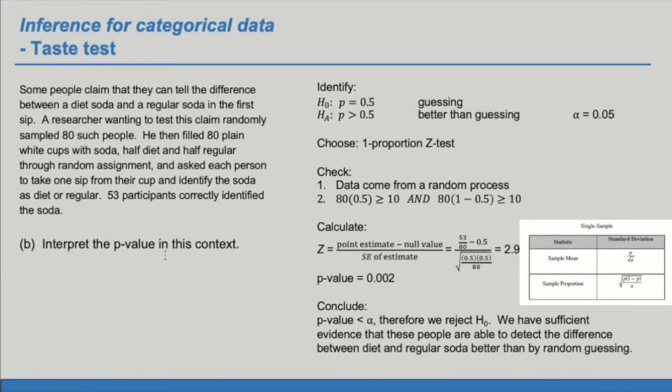Part B, interpret the p-value in this context. So our p-value is 0.002. And the definition of a p-value is the probability that we get data at this extreme in the direction of H sub A given that the null hypothesis is true.